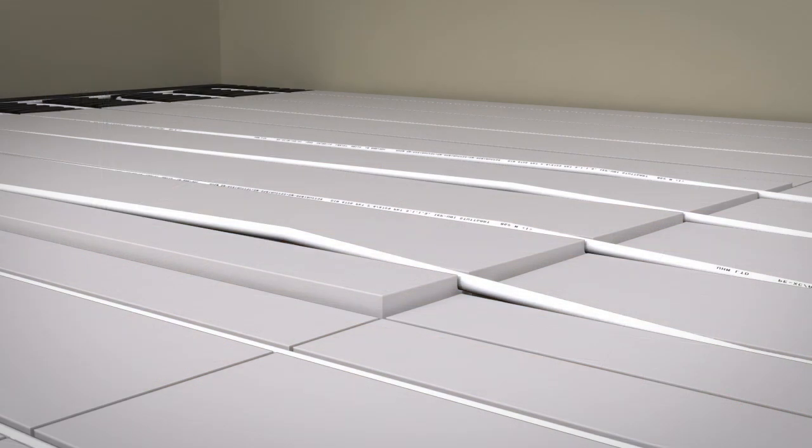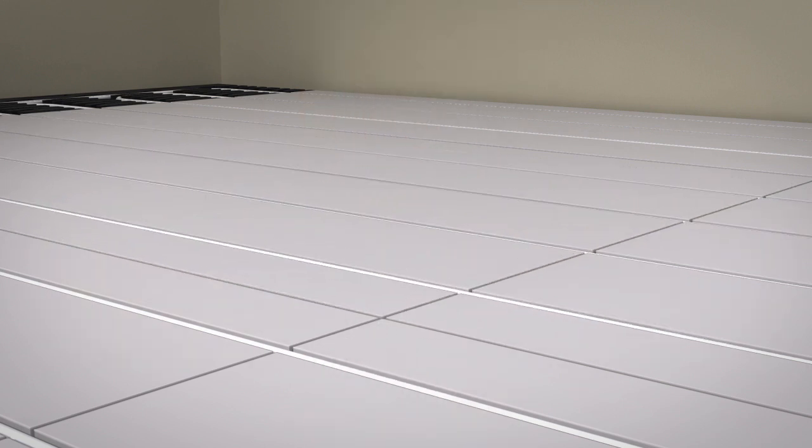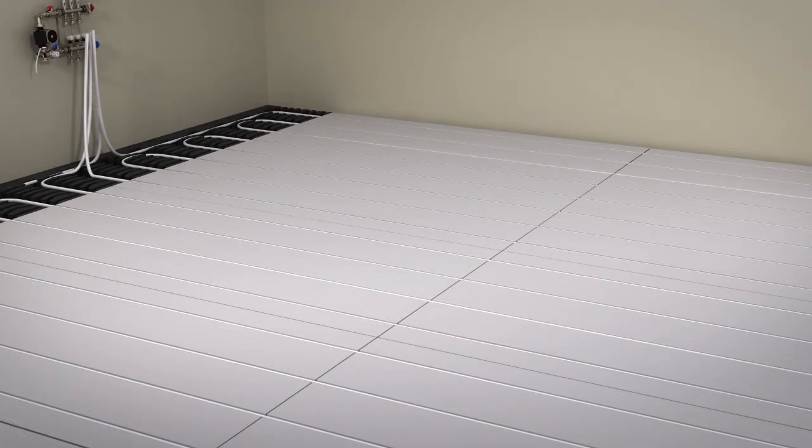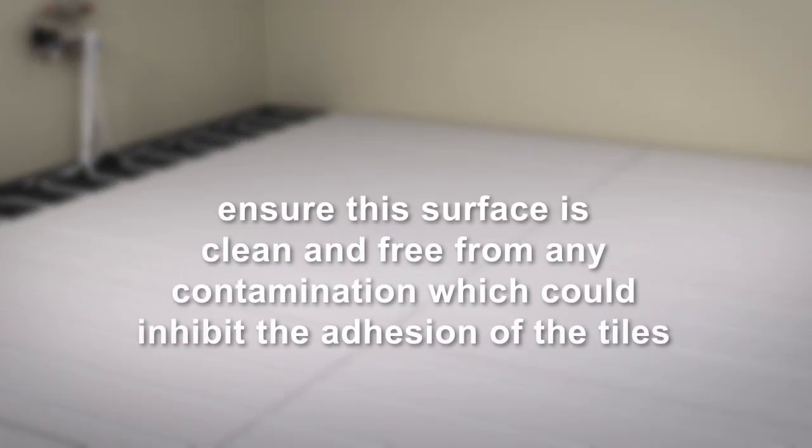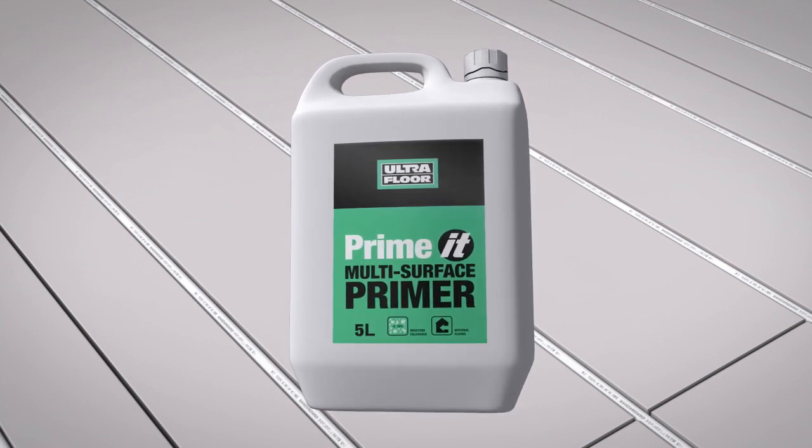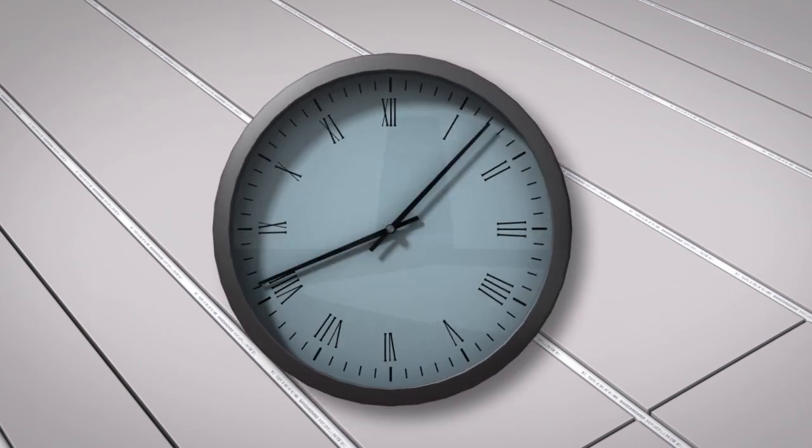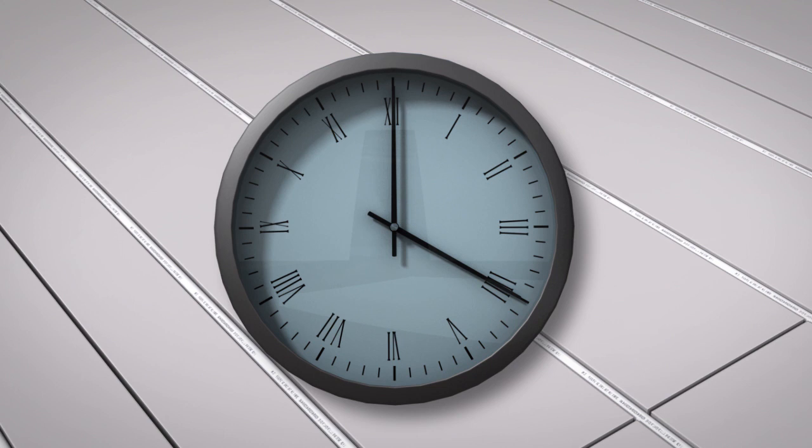When installing floor tiles, you must ensure that the heating panel and pipes have been installed correctly and provide a sound and stable substrate that is completely flat. You must also ensure that this surface is clean and free from any contamination which could inhibit the adhesion of the tiles. Begin by applying Primit MSP, neat, to the upper face of the boards. This should be applied by brush or roller in a thin film. Allow to thoroughly dry to a clear film. This should take between one and four hours, depending on room conditions.